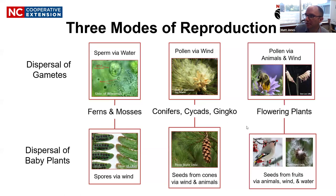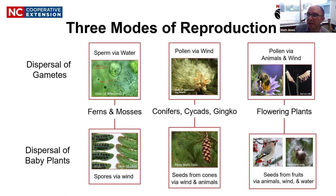A seed is much larger than a spore — many, many cells. It has an embryonic plant already inside it along with some nutritive tissue and a protective outer covering. In the angiosperms, the focus of today's talk, they evolved initially to have their pollen dispersed by animals. Pollen can be larger and clumpier, attaching to animals that move around to find a reward such as eating some of the pollen or nectar. Those pollen grains then grow on certain parts of the flower and fertilize the egg inside.